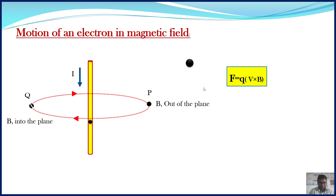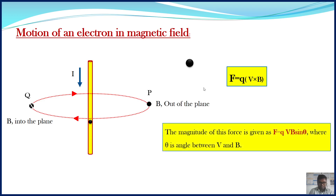The magnitude of this magnetic force is given as F equals QVB sinθ, where θ is the angle between V and B. This magnetic force F is perpendicular to both the velocity and magnetic field — this is the property of the cross product.